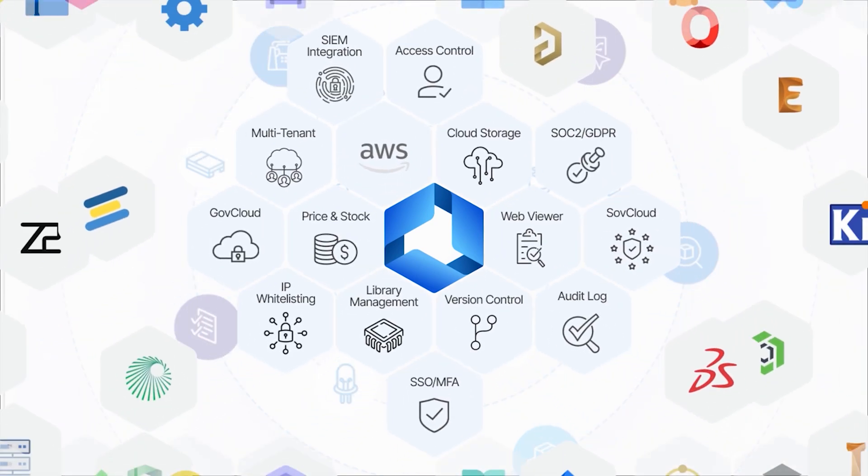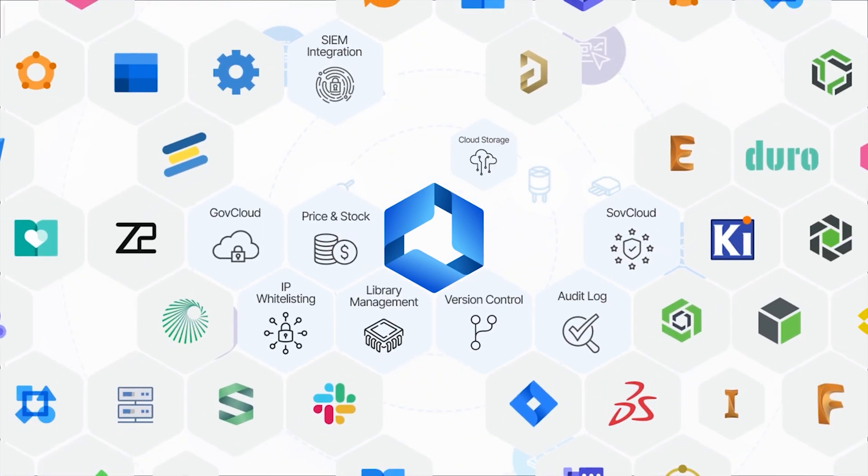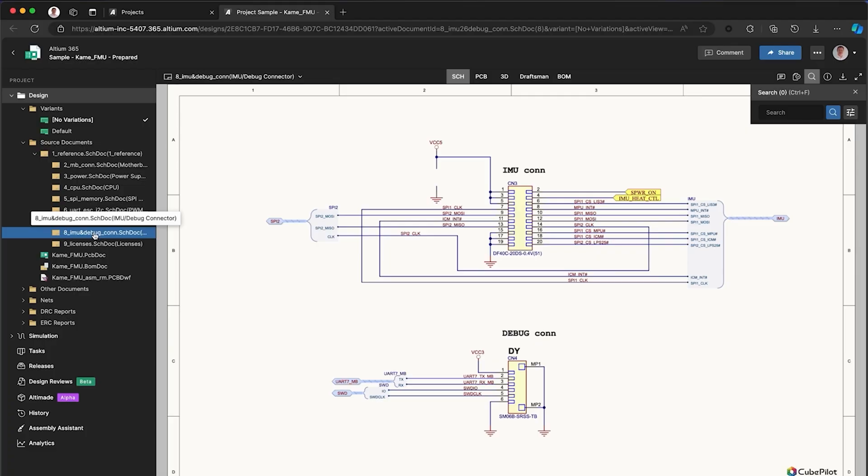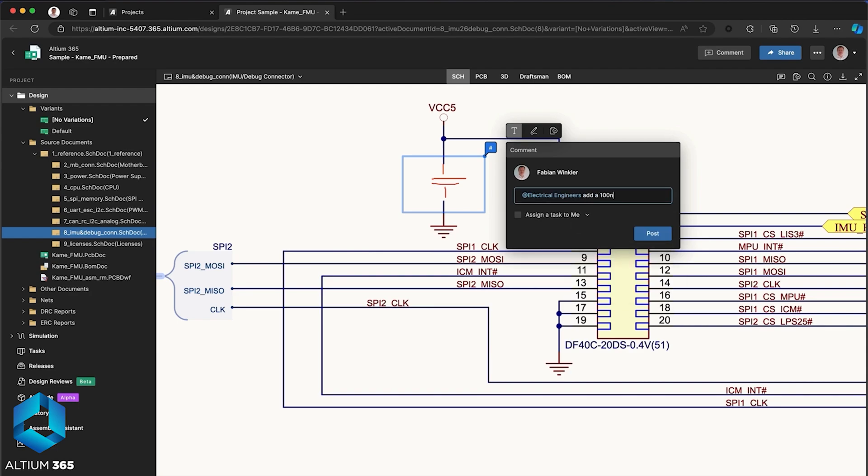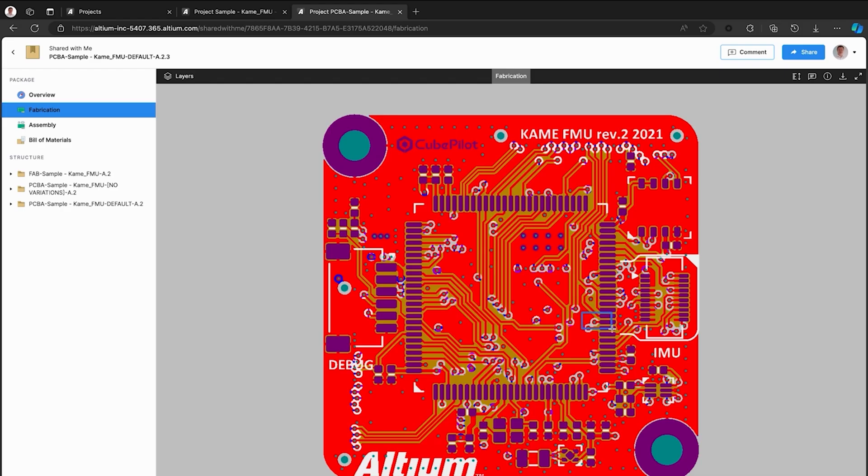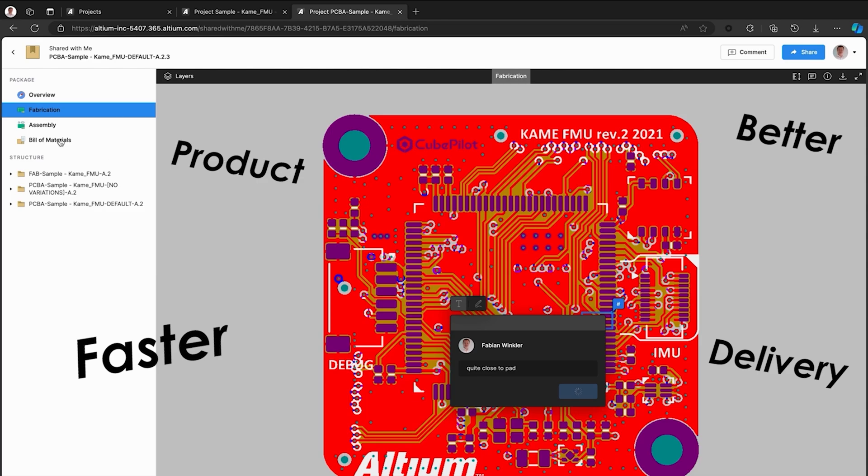The world's first open electronics hardware developer platform that connects your entire team anywhere in the world. Collaborate securely in real-time, manage designs and components and streamline your workflow from concept to production. Say goodbye to delays and hello to fast product delivery with Altium 365.